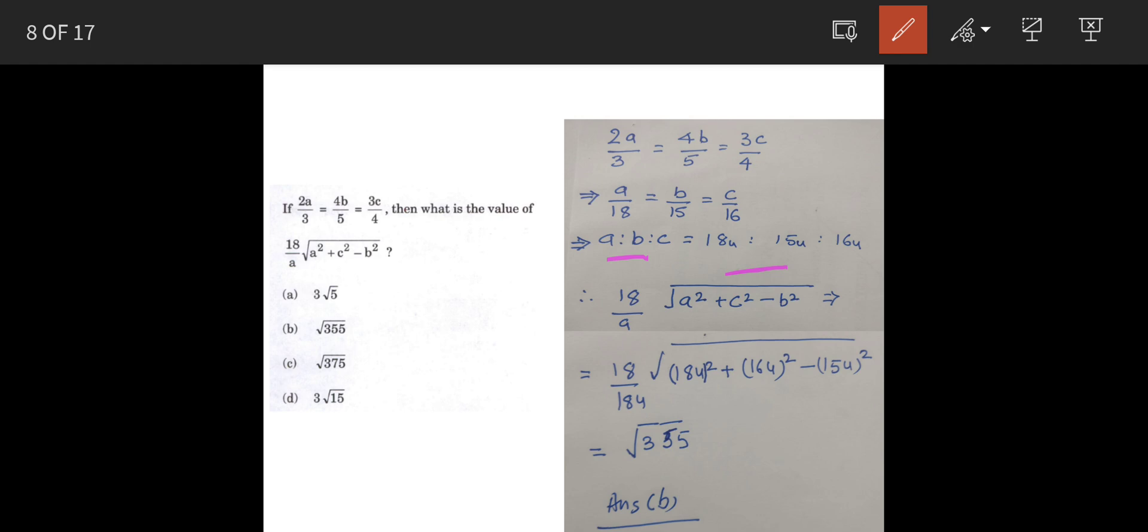When you sum them up, they represent one unit. So, you can write them 18u, 15u and 16u or you can write them as 18x, 15x or 16x. So, now put up the equivalent values here in the equation.